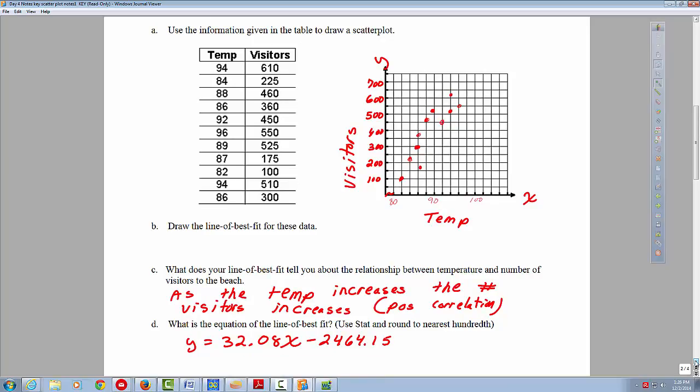So what does your line of best fit tell you about the relationship between the temperature and the number of visitors at the beach? That as your temperature increases, the number of visitors increases as well. That means we have a positive correlation.